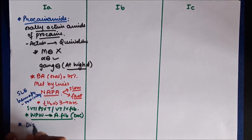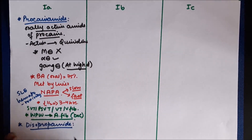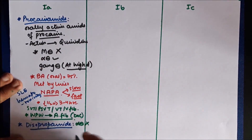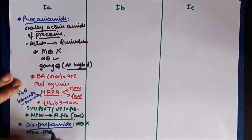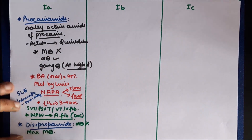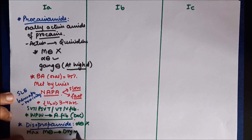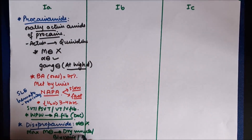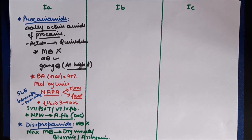Another Class 1a drug is disopyramide. This drug does not have alpha-blocking properties but has the maximum anticholinergic effect among this class, causing maximum anticholinergic side effects such as dry mouth and blurring of vision. It is contraindicated in glaucoma and benign prostatic hyperplasia because it causes urinary retention, and it can itself cause arrhythmias.